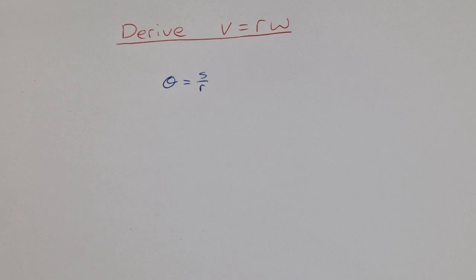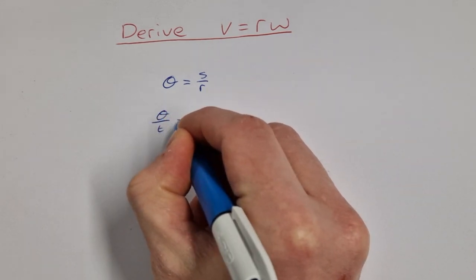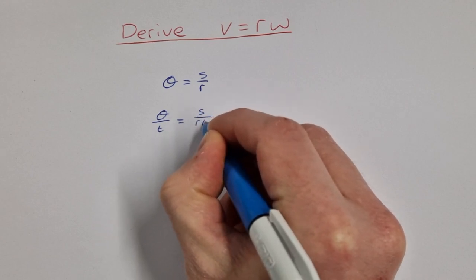We can then get this and divide both sides by t so that would be theta over t is equal to s over r times t.